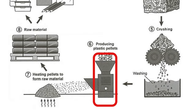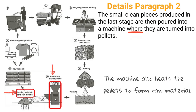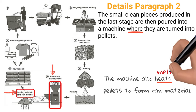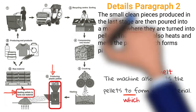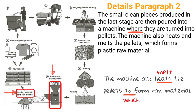Now let's go back to this machine. It not only produces plastic pellets but also heats the pellets to form raw material. If we just copy the original: 'the machine also heats the pellets to form raw material.' We can add the verb 'melt': 'The machine also heats and melts the pellets.' We can replace 'to do' with a 'which' clause: 'which forms raw material.' We can also change 'form' to 'make' or 'create': 'which creates plastic raw material.'